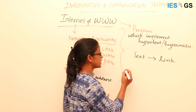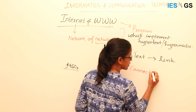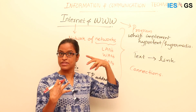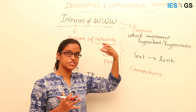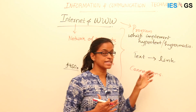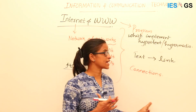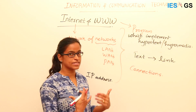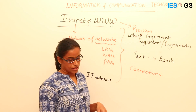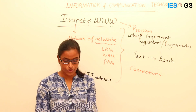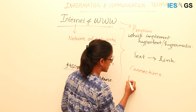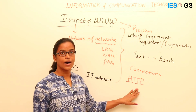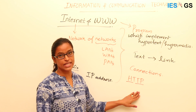WWW works with different connections, similar to the way the human mind works. When we see something, we remember something else — there is a connection between our thinking. Using these different links, the resources in the network are connected. This connection is made possible by a protocol called HTTP, that is Hypertext Transfer Protocol, which determines how two systems communicate with each other.